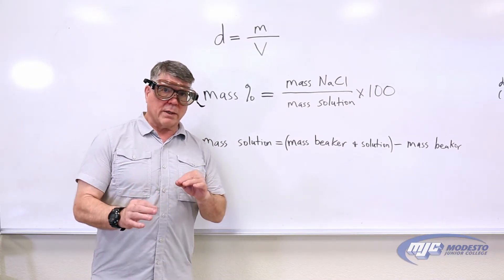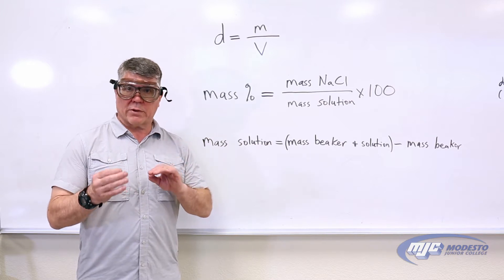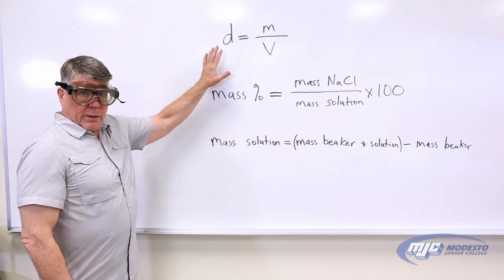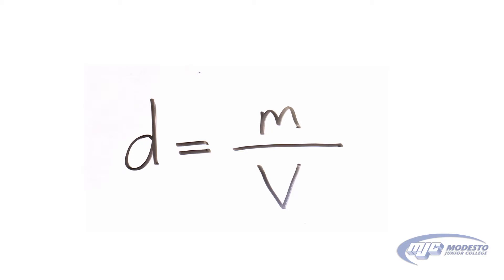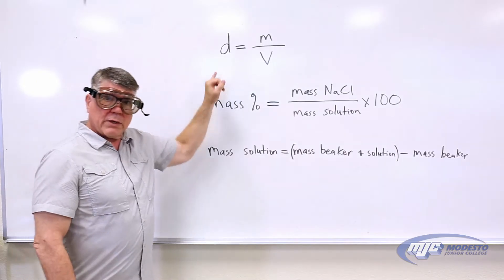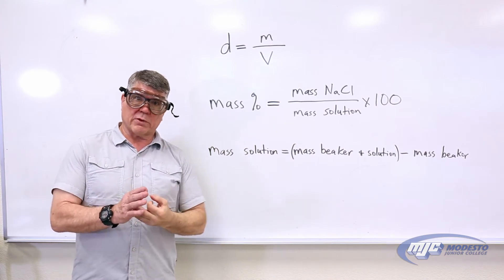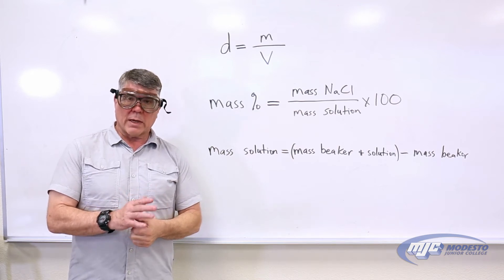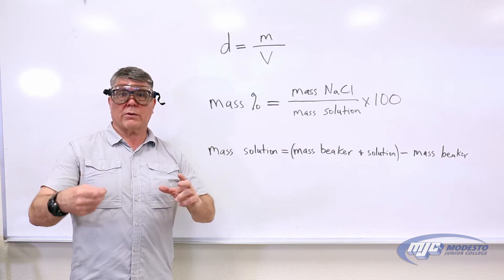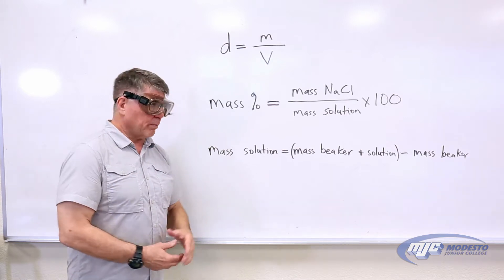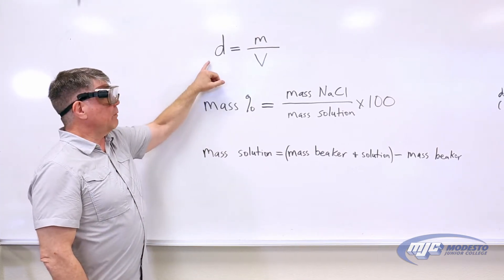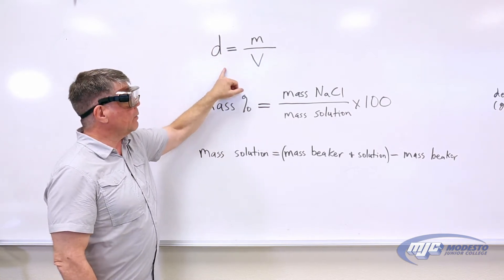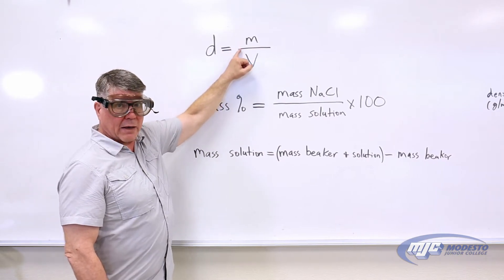So what we're going to look at today is the density and mass percent of sodium chloride in aqueous solutions of sodium chloride. Starting at the beginning: density is mass over volume. We're going to need to know the density and the mass percent sodium chloride of our five samples that we make up, as well as the density of our unknown to calculate its mass percent sodium chloride. We're going to get the data we need during the experiment, and to do that we need two things: the mass and the volume — we'll weigh them and measure the volume.